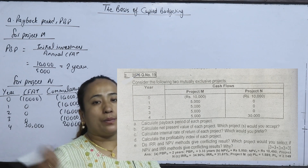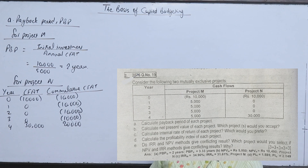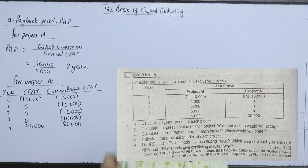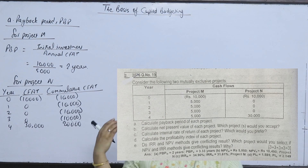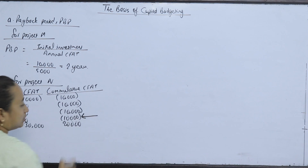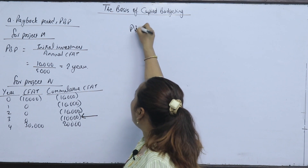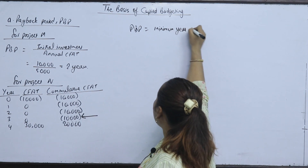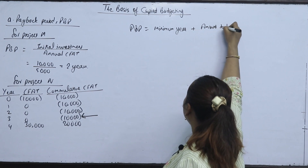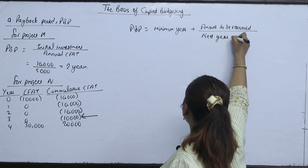We add positive cash flows cumulatively. We apply the PPP formula: Minimum year plus amount to be recovered divided by next year's annual CFAT.